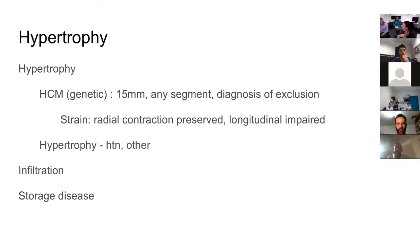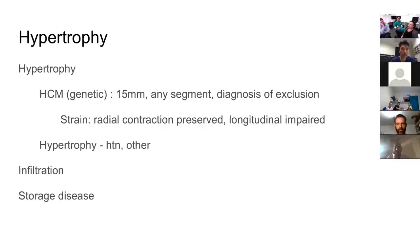The longitudinal fibers on the inside of the endocardium are the ones most sensitive to ischemia. Our eye won't pick up the impairment, but strain will — it might look normal visually, but global longitudinal strain is specifically what's impaired. That's typically what's measured.